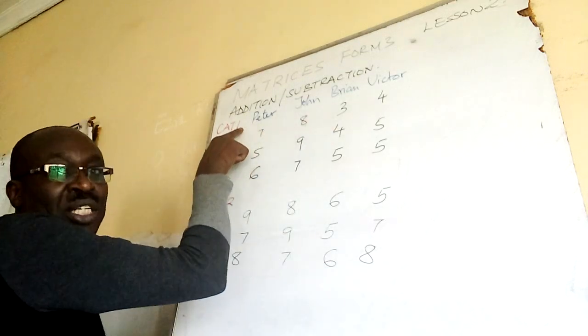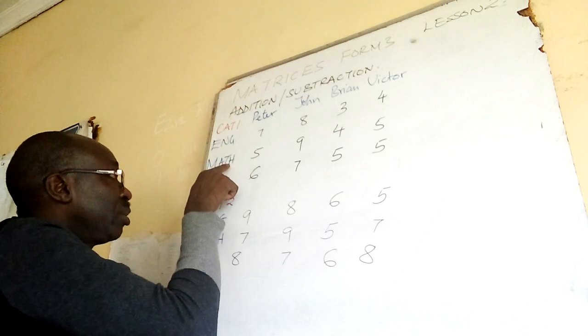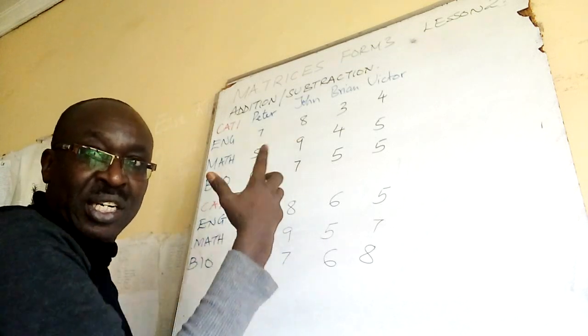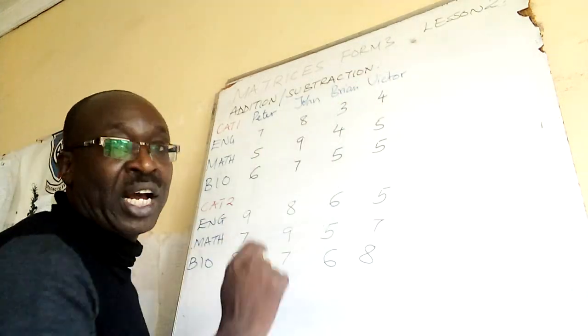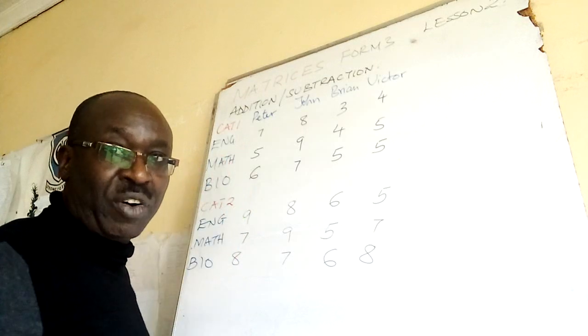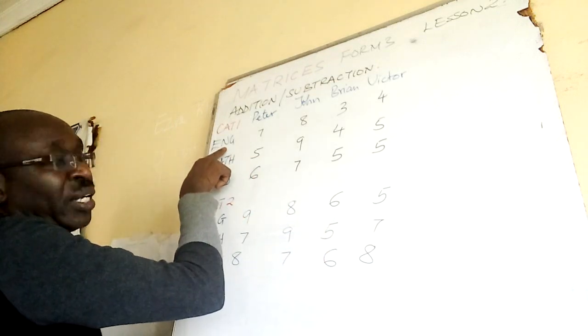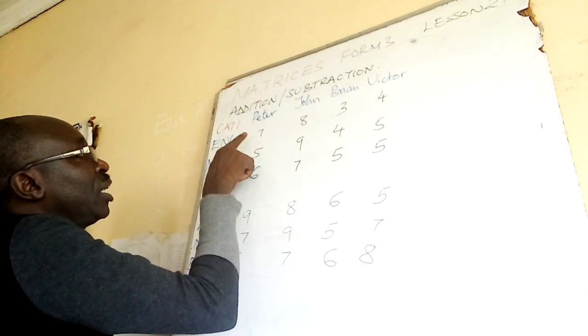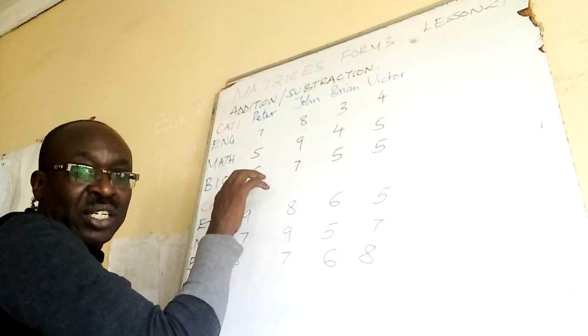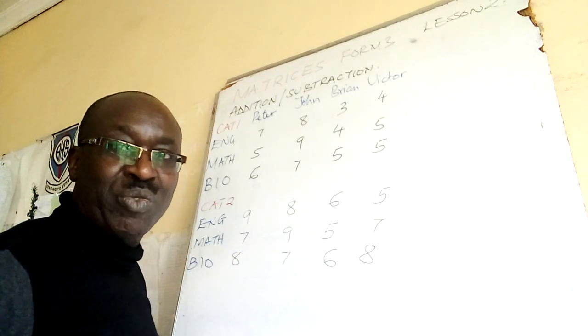This table one shows cut one marks for English, Maths and Biology. The students in my class are Peter, John, Brian and Victor. My class has only four students. So this cut was out of ten. In English, Peter got this. In maths, he got that. And in bio, he got that. You can easily interpret my table. So I tabulated the marks of my four students.